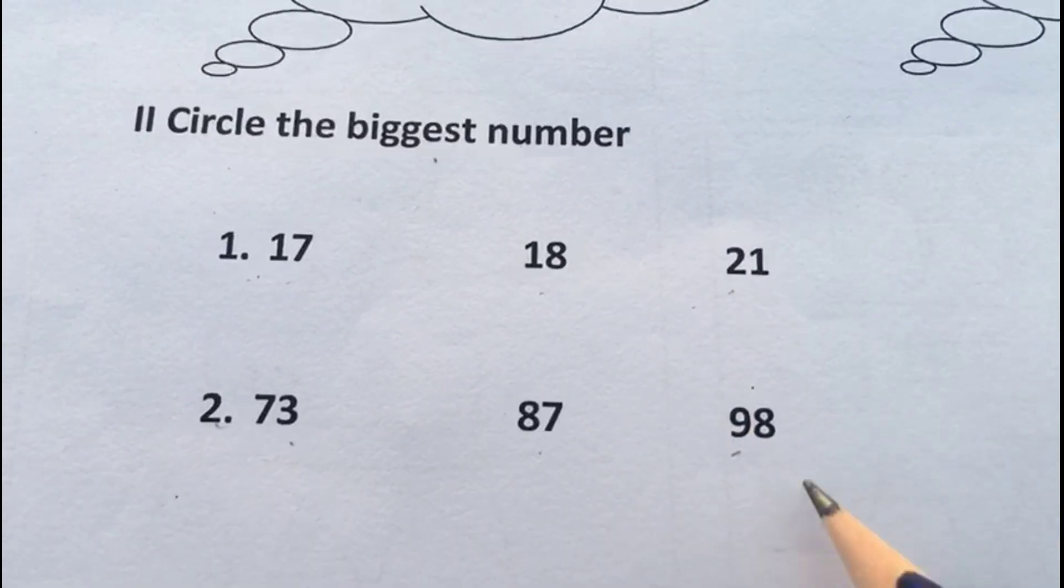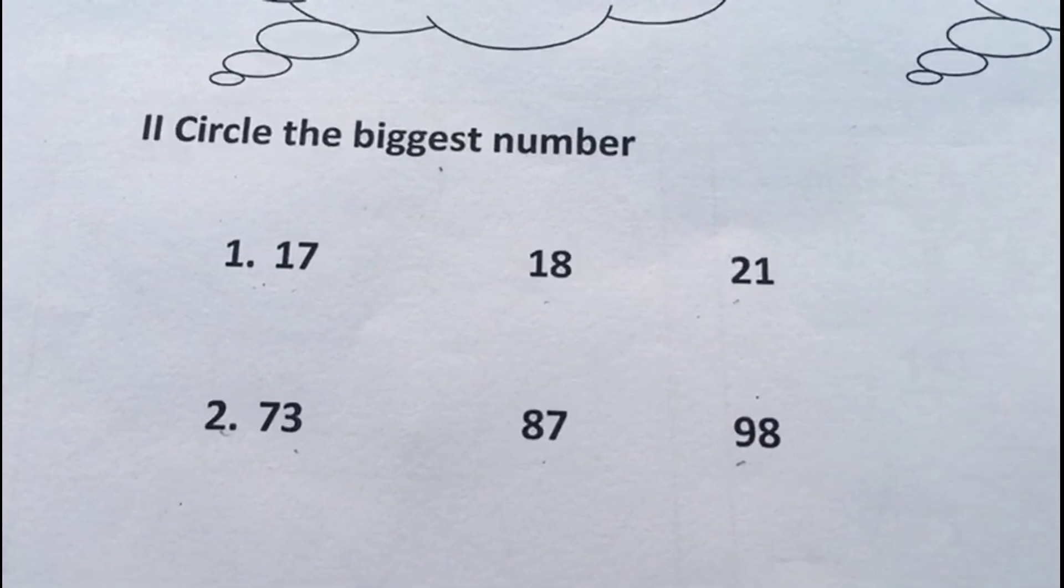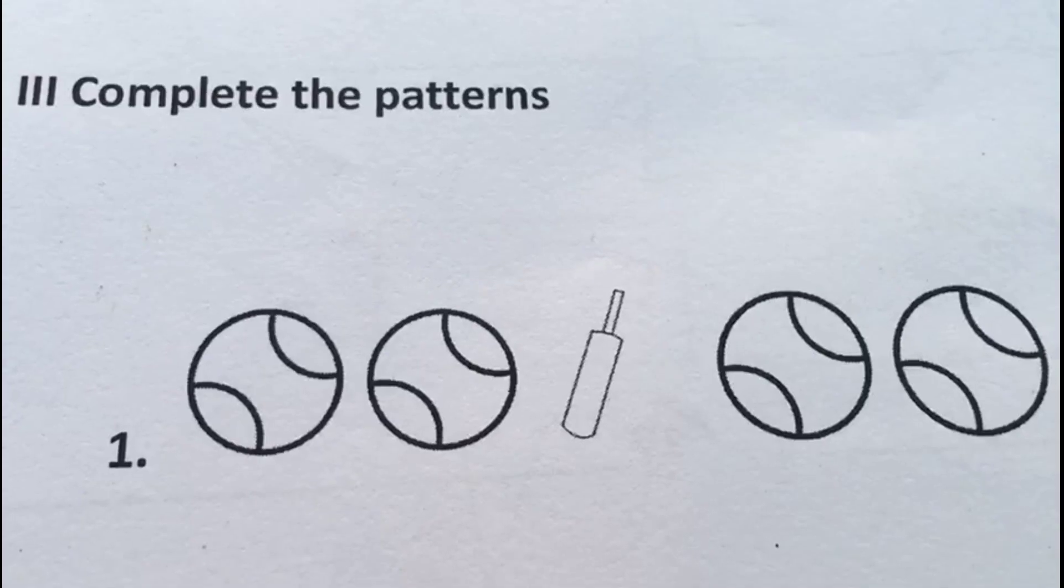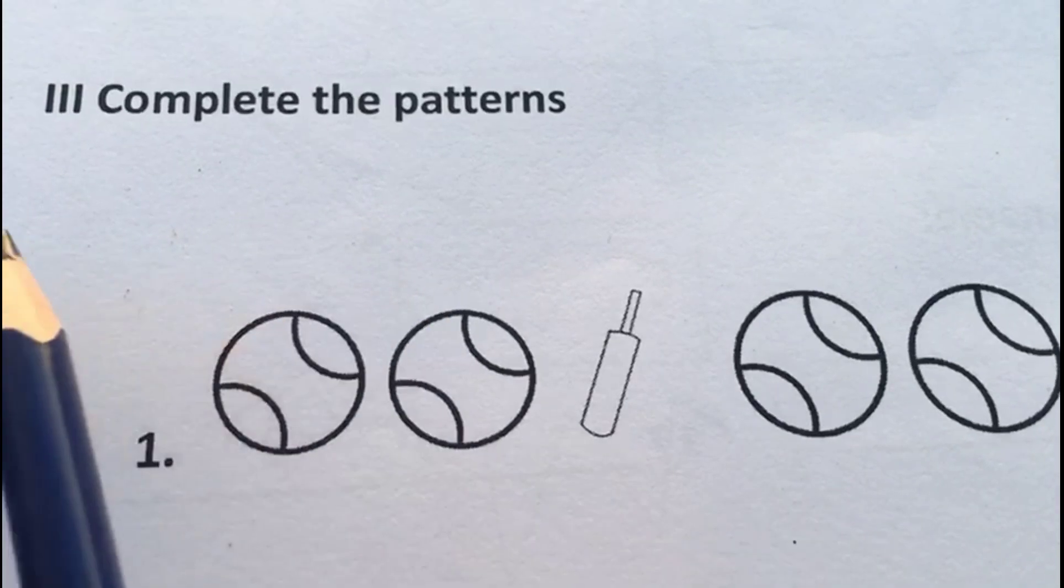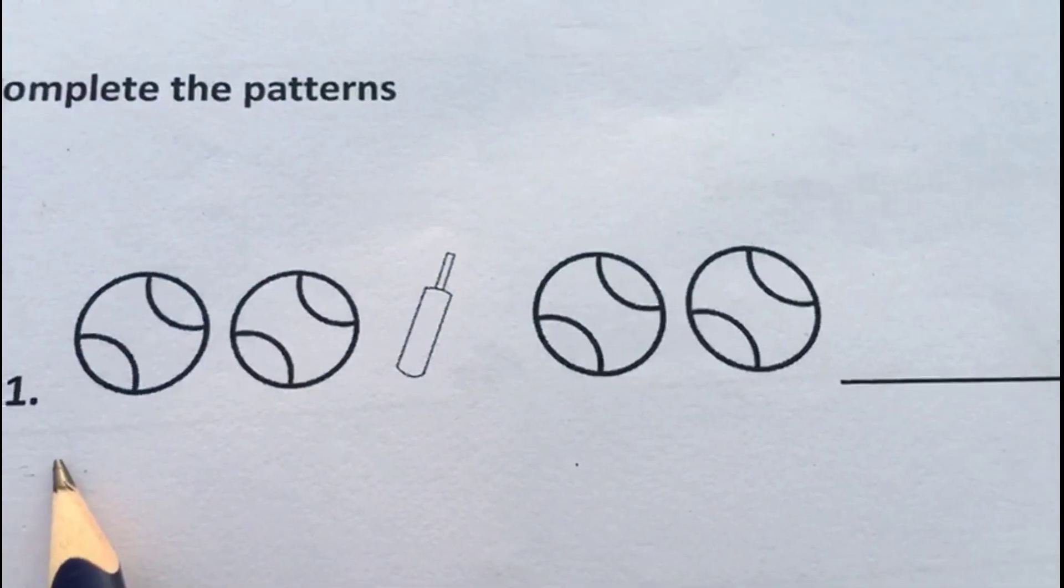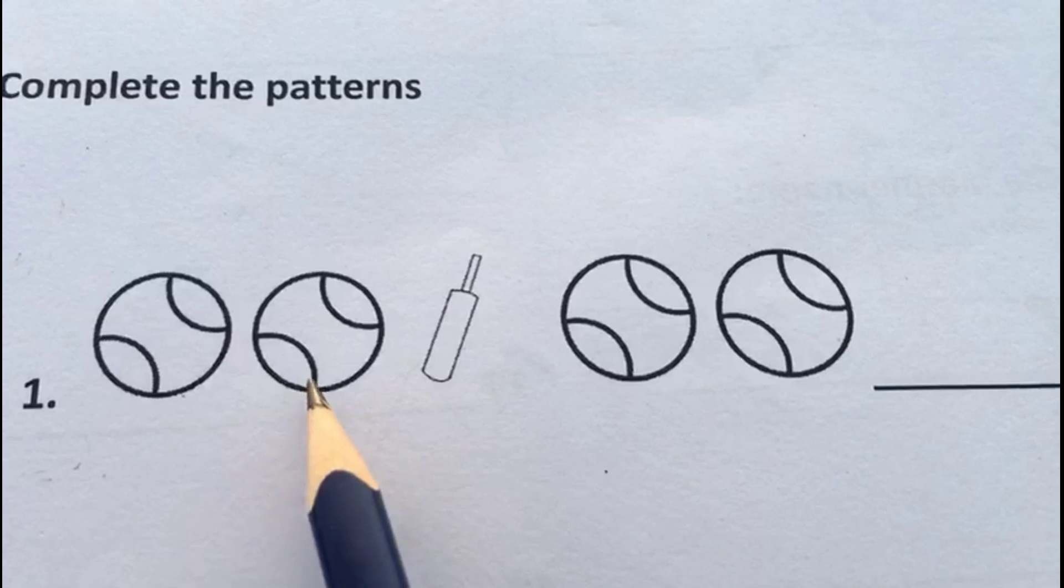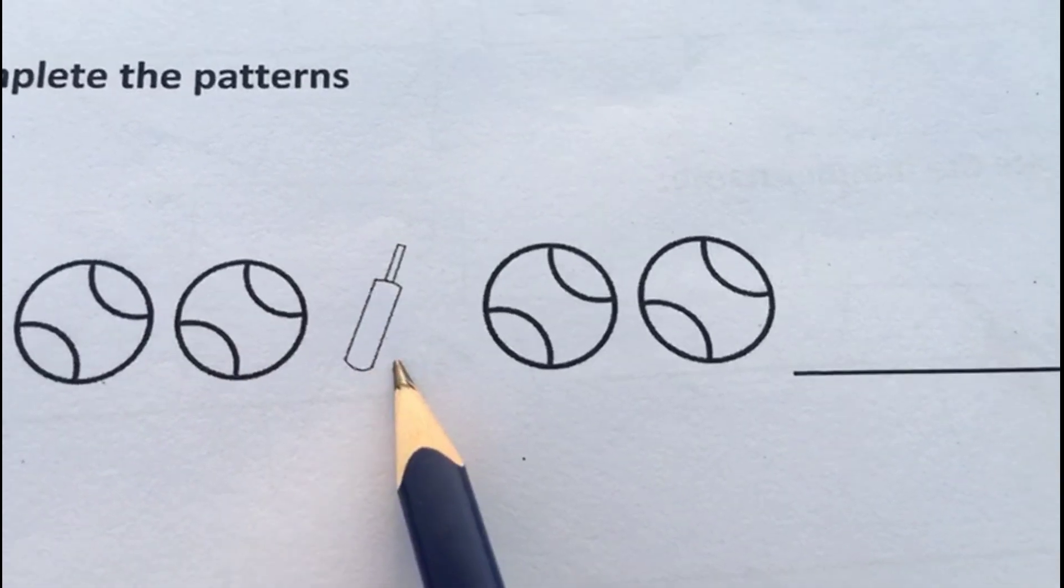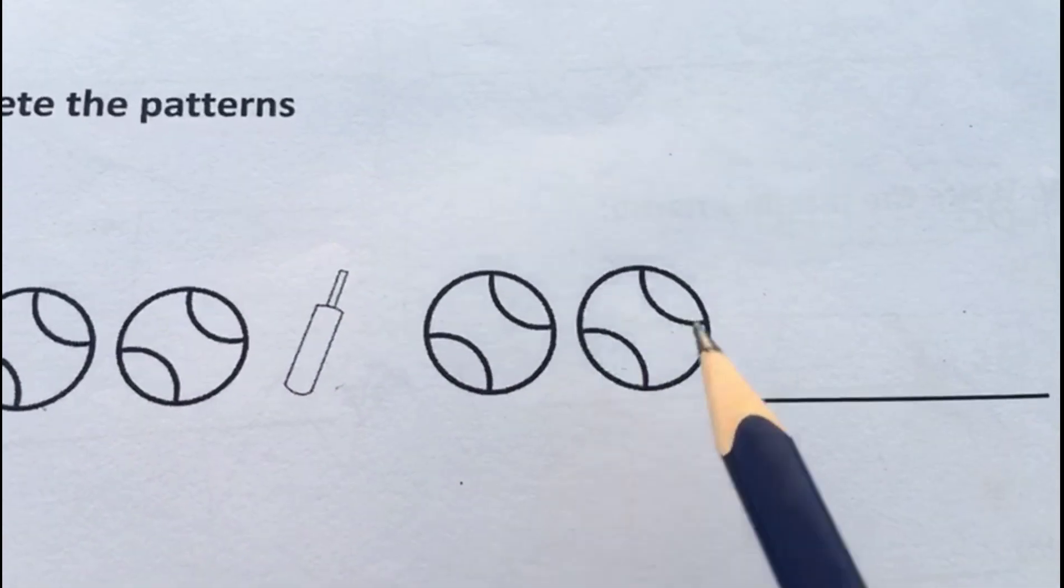This is our third question: complete the patterns. Here we have a pattern of bat and ball - two balls, then a bat, again two balls. Then what comes after that? Yes, ask your child to find out what comes after that, then let him or her draw the picture.